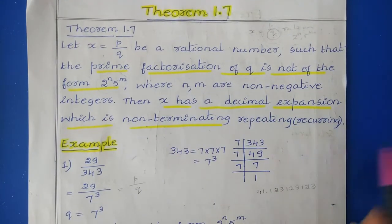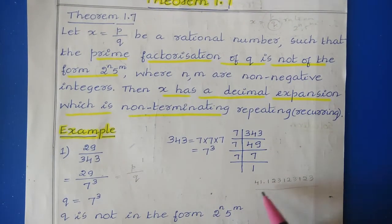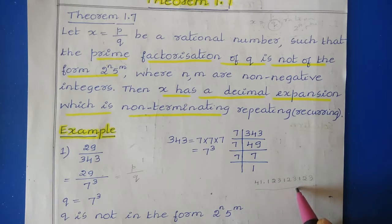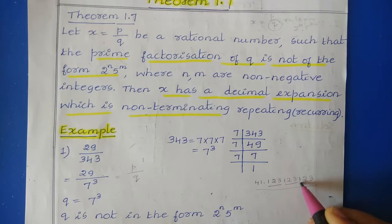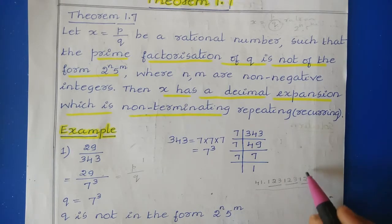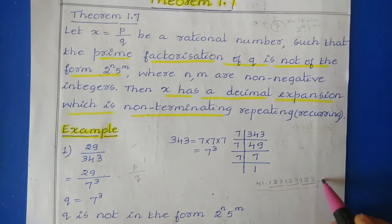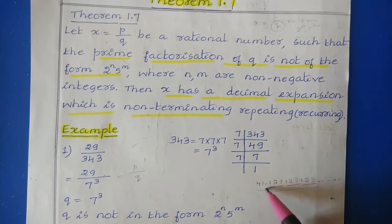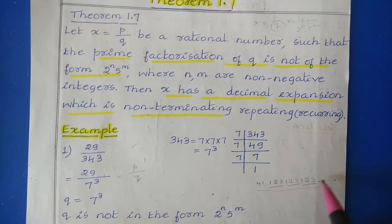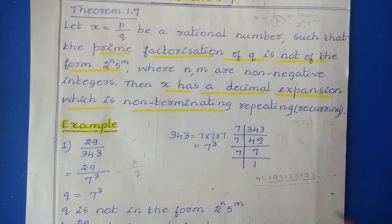Non-terminating repeating means there is no end. For example, consider the number 41.123123123. This is one example of a non-terminating repeating decimal expansion, where after the decimal point we have 1, 2, 3 — and this 1, 2, 3 is repeated. So this number follows a certain pattern after the decimal point and there is no end. It has infinite digits after the decimal point, and those digits repeat in a particular pattern.